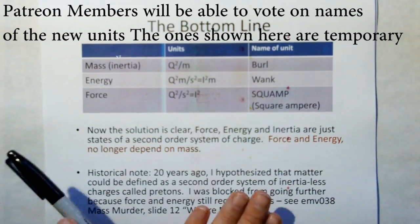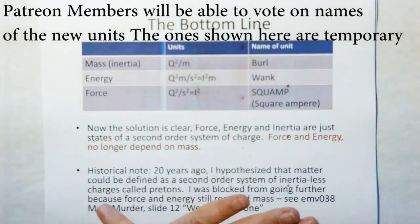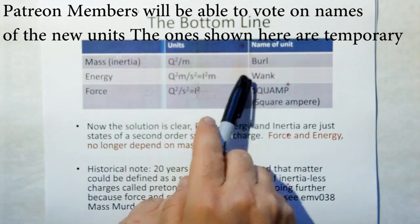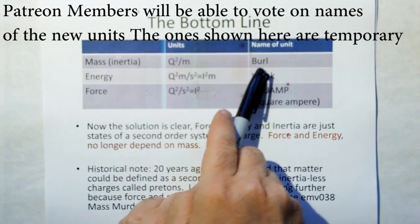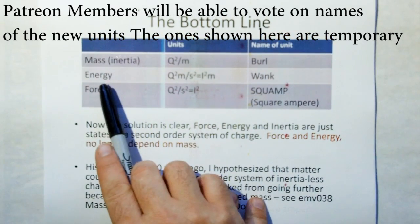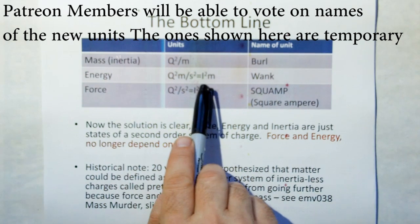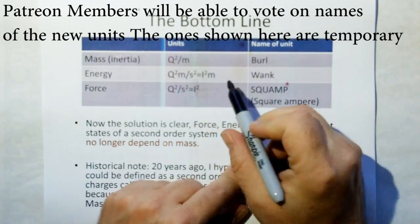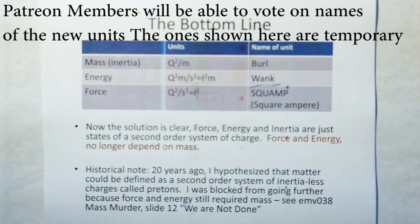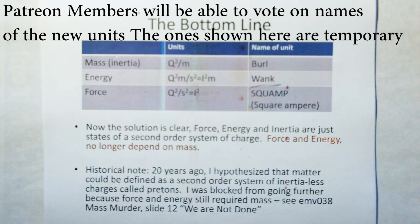Here's the bottom line. The new definition of mass, which it's not mass, let's get rid of mass, it's really inertia. Inertia is going to be, I've decided on the name burliness or heaviness, which is q squared per meter. The unit of energy is square current meter, square amp meter. The new unit for force is square ampere or squamp for short. The solution is clear: force, energy, inertia are just states of a second order system of charge. Force and energy no longer depend on mass.